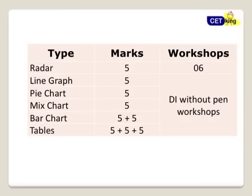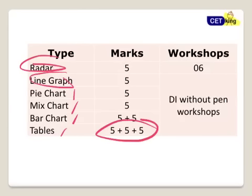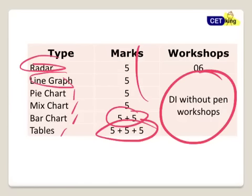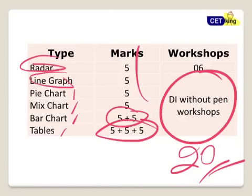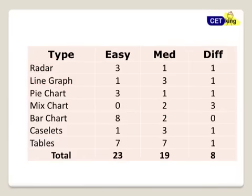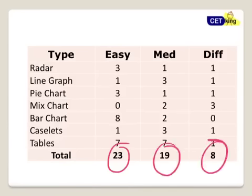The main areas in DI: radar based questions — that was a new type of question, as every year there is one experimentation. Line graph, pie chart, mix chart, bar chart, table — there will be three tables, two bar charts, and one on each of the others. All my DI without pen workshops — probably around twenty workshops — will be more than sufficient to crack this area. DI is one of the very very scoring areas because other people will not be able to score here. 23 easy, 19 medium, and 8 difficult questions were there from this section.